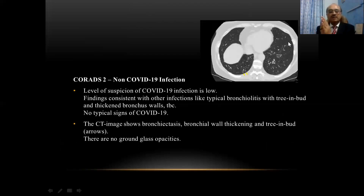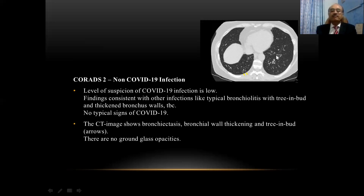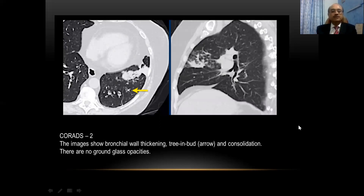CORADS 2 is again suggestive of a non-COVID-19 infection; the level of suspicion of COVID-19 is low. The findings on the CT scan can be consistent with other infections — they can show typical bronchiolitis with tree-in-bud appearance or thickening of the bronchial walls, with no typical signs of COVID-19. This CT shows minimal bronchiectasis and bronchial wall thickening with tree-in-bud appearance. There are no ground glass opacities seen, so this is negative for COVID-19.